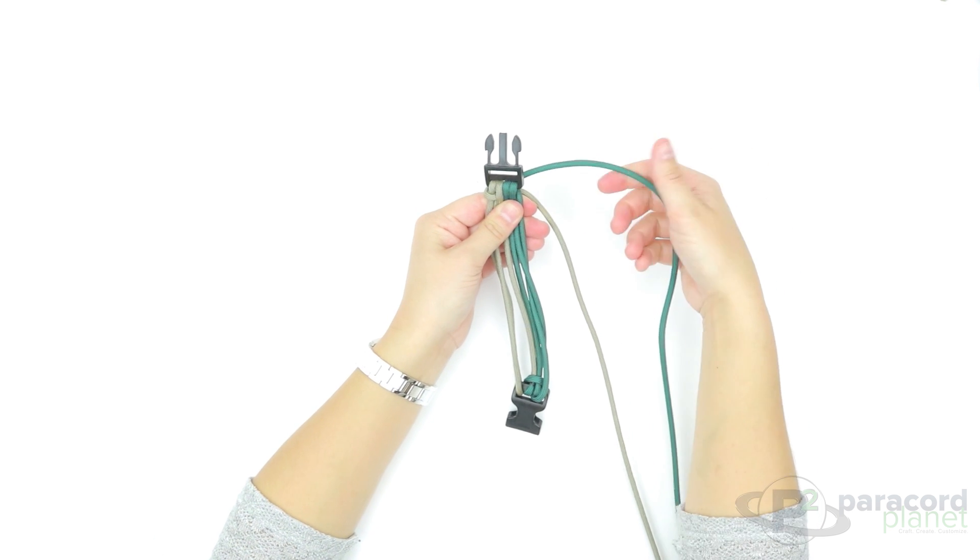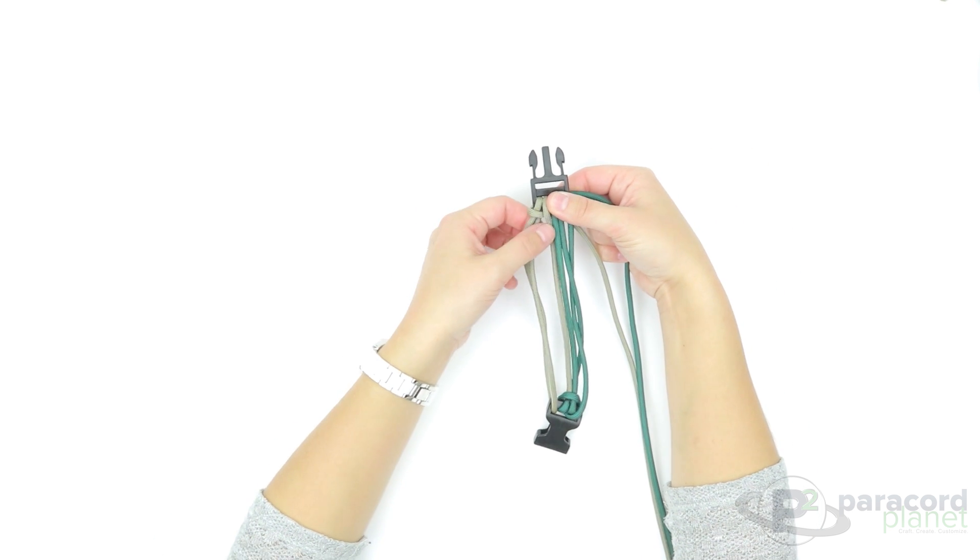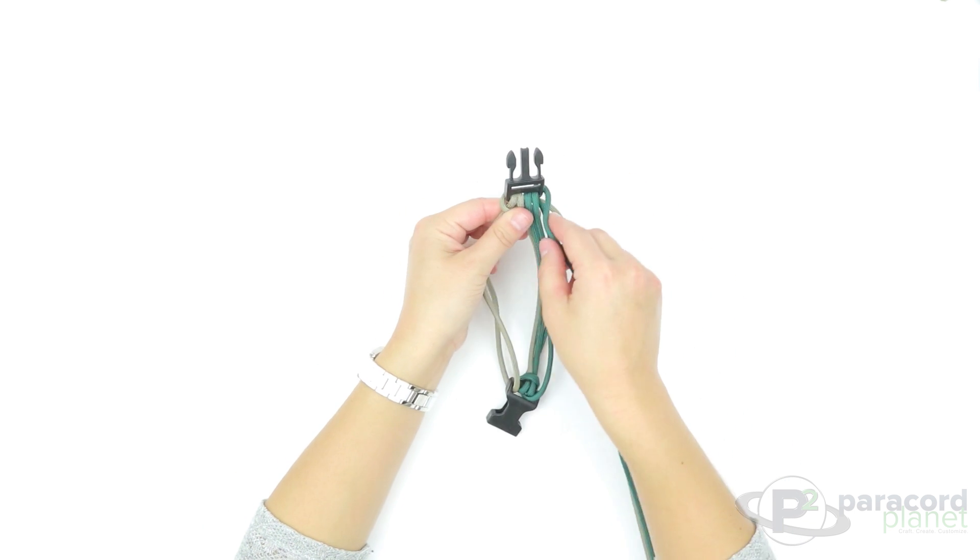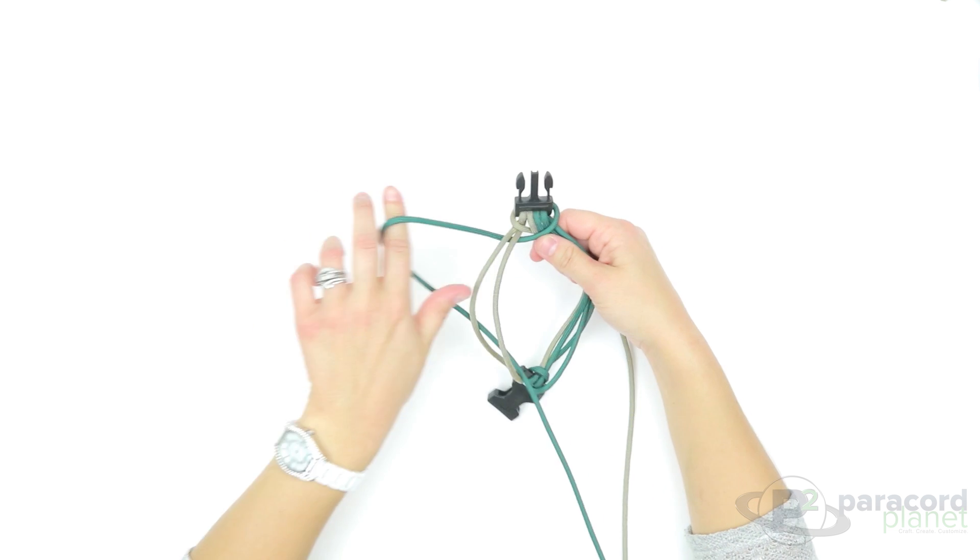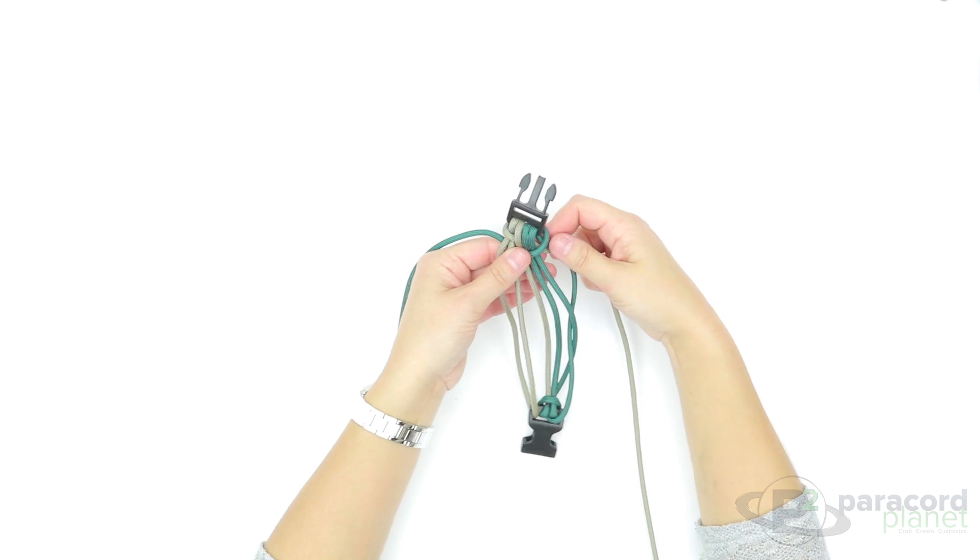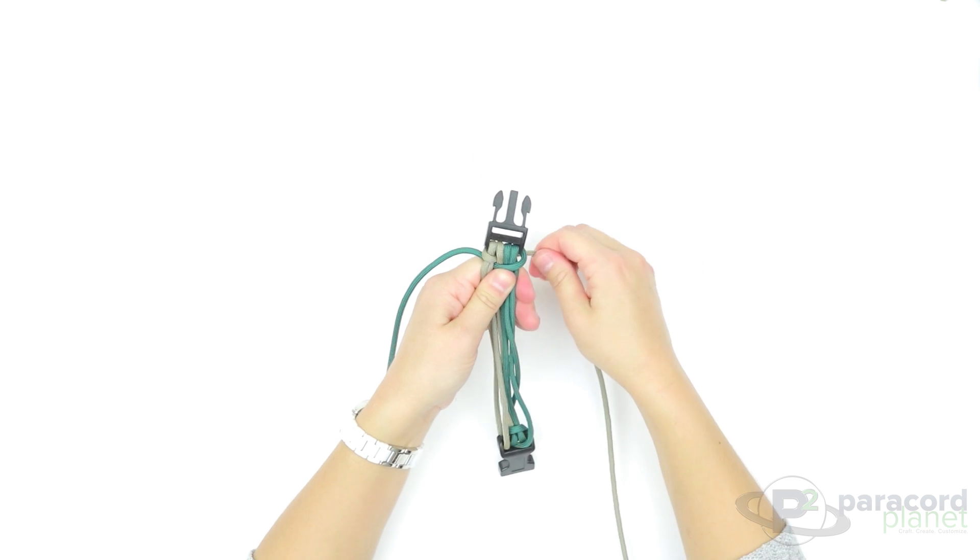Then you'll take your other cord and you're going to go in through this same slit that you just went through, so you're going to go over four cords and behind two. Just push them both up and pull down tight.